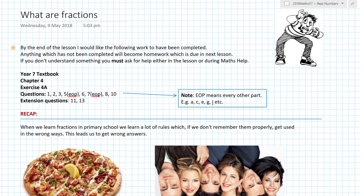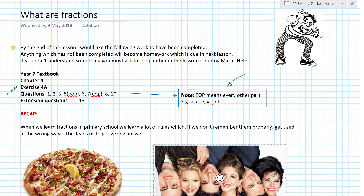Those of you who I am teaching and who are suffering through my dreadful lessons are going to be asked to do this. The year seven textbook, chapter four, four A. EOP means every other part, so you don't have to do every single question. You're going to do questions one, two, three, five, six, seven, eight, ten. And those who really want the challenge should have a go at the extension questions.